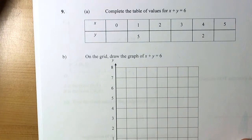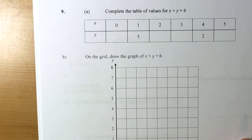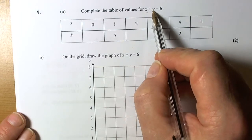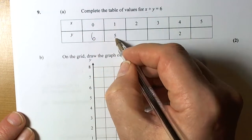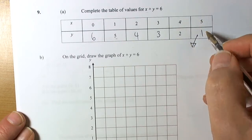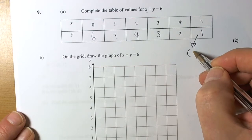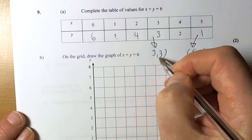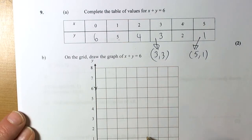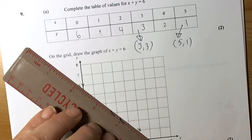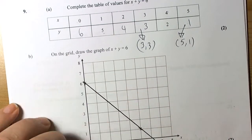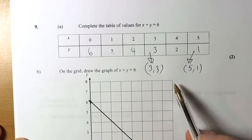Complete the table: x plus y equals 6. So 0+6=6, 1+5=6, 2+4=6, 3+3=6, 4+2=6, 5+1=6. The coordinates to plot are (0, 6) and (5, 1). Plot those two points and draw the line through them accurately — that's the line x plus y equals 6.